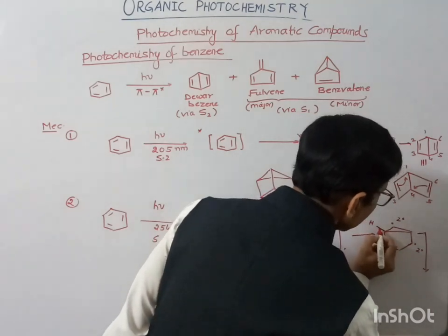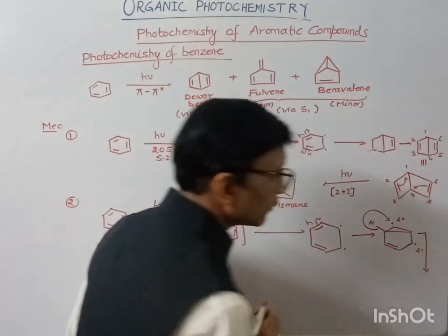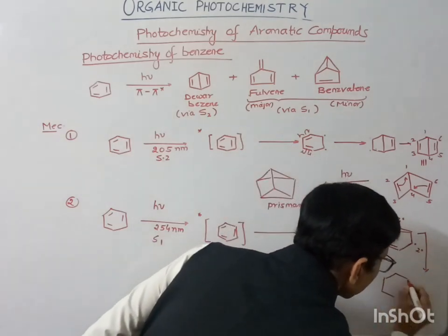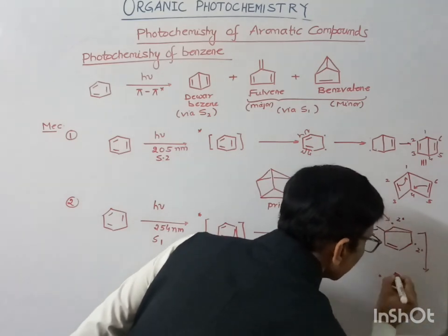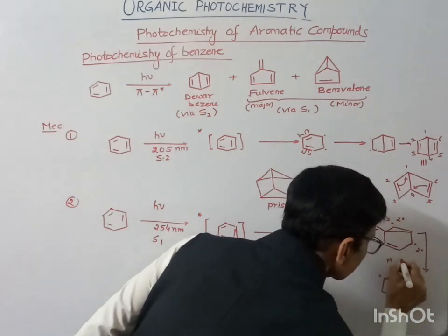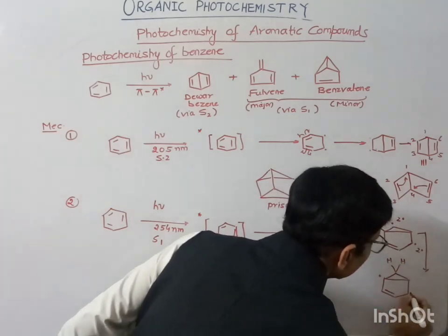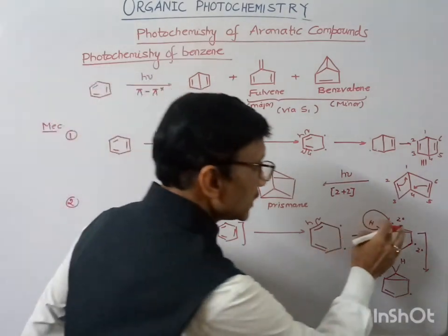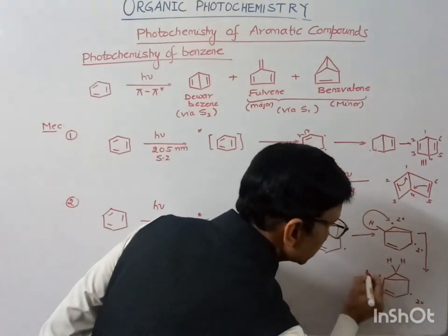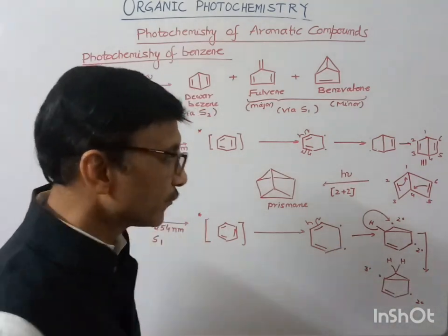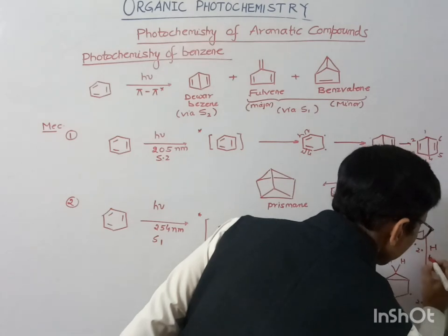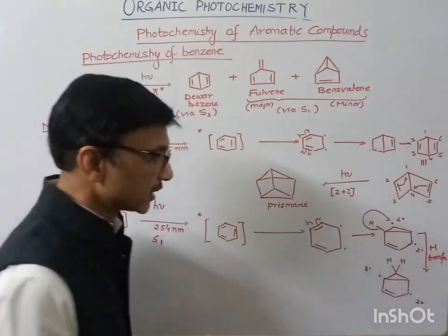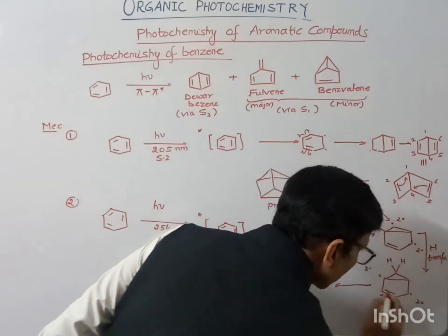Rearrangement can take place here: one of the hydrogens present can form a bond, and one of the radicals will remain. What we get is a radical here and two hydrogens. As you can see, a tertiary radical is formed from a secondary radical. The driving force here is the hydrogen radical transfer, and the driving force is the formation of the tertiary radical.